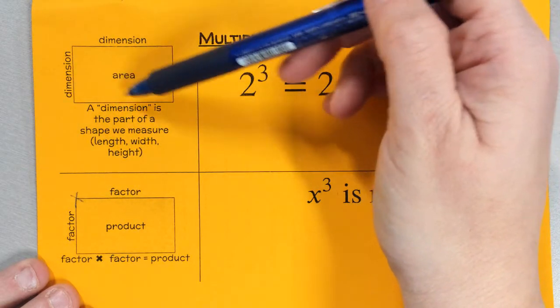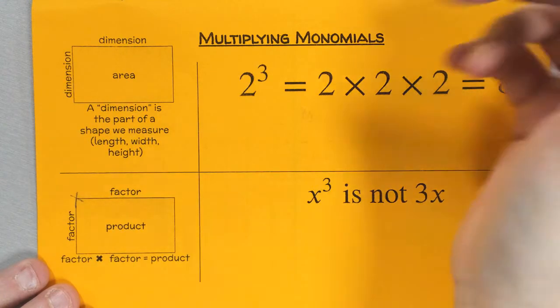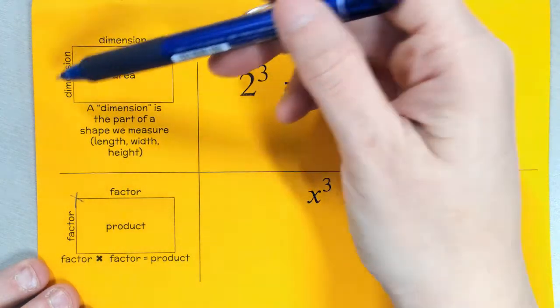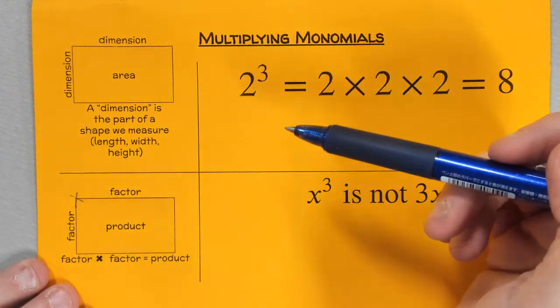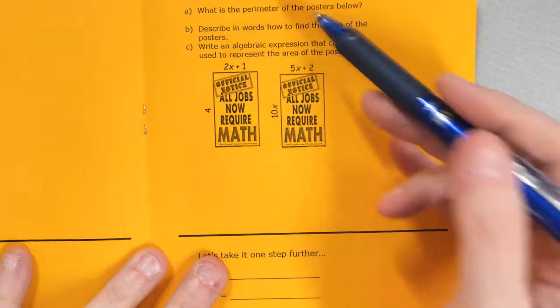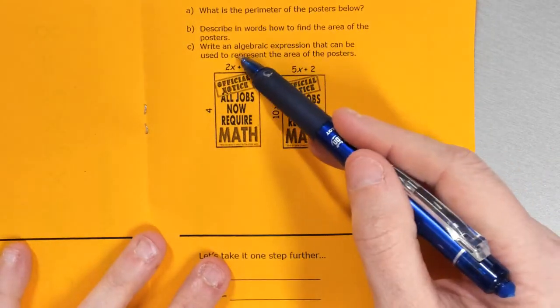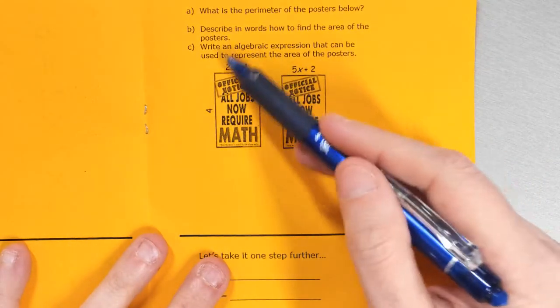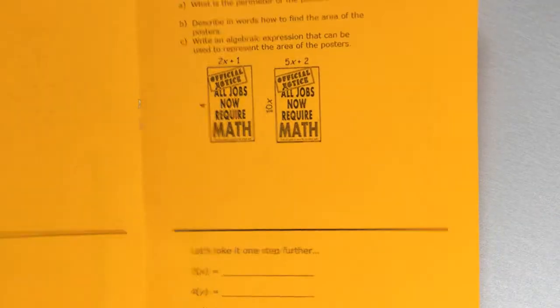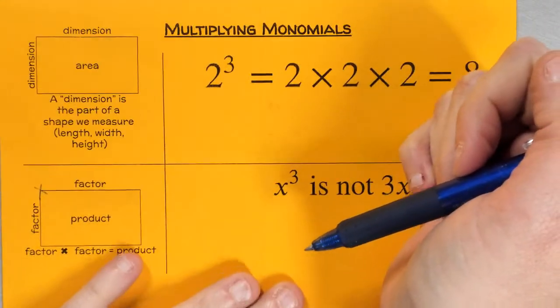Area is something we calculate using the length and width that we've measured. You'll be asked: if I give you a shape and say what are the dimensions, what's the area? You have to recognize that the side lengths are the dimensions, and when I multiply them together, that's when I get the area. Factors multiply to give us a product.